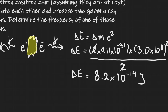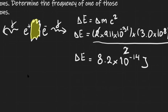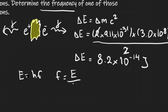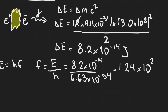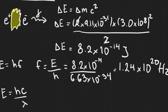Each photon gets 8.2 times 10 to the power of minus 14 joules. Because we're looking for the frequency, we use E equals hf, meaning frequency equals energy divided by Planck's constant. So it's 8.2 times 10 to the minus 14 divided by 6.63 times 10 to the minus 34, giving us around 1.24 times 10 to the power of 20 hertz. Remember, if looking for wavelength, use E equals hc over lambda instead.